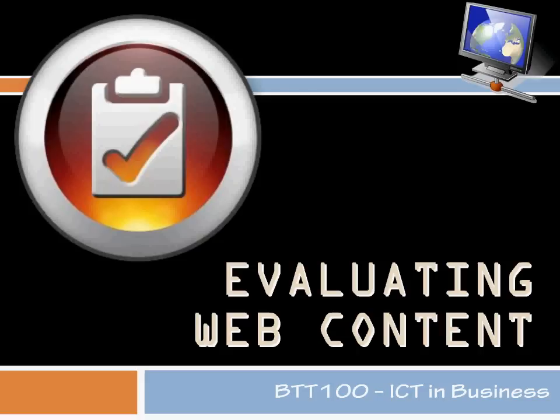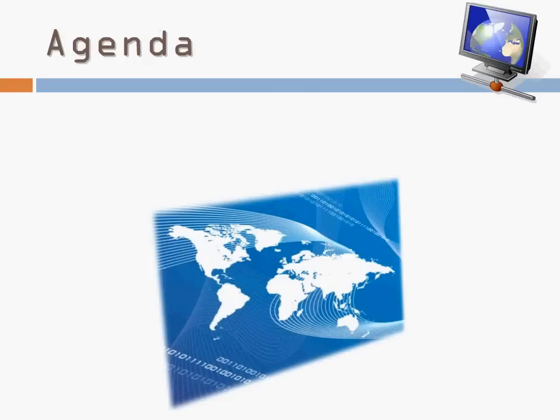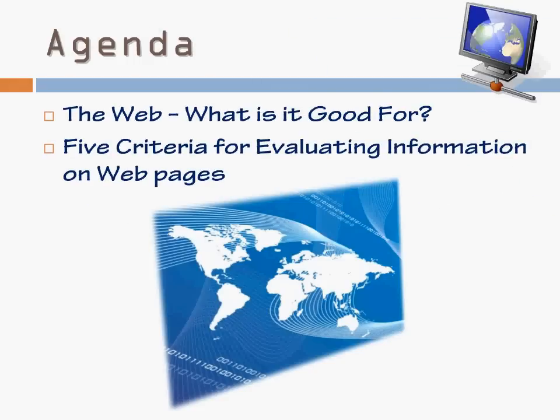So make sure you get out your pen and paper, you follow the storm philosophy, and sit back and enjoy. We are going to first identify what the web is good for, and really what it's not good for. And then we're going to identify the five criteria that we want to use when we are evaluating web content.